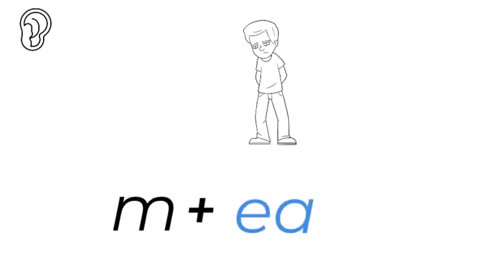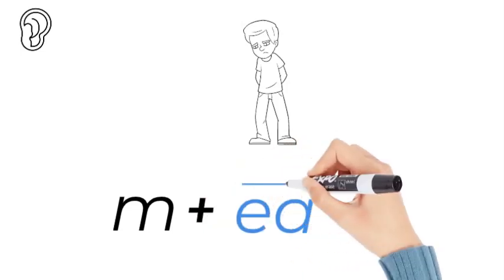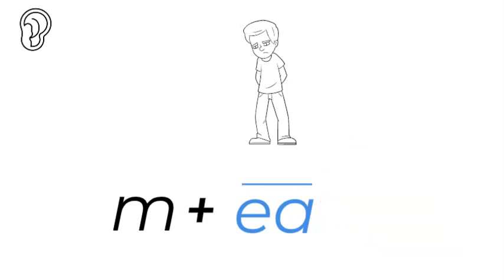That is a long vowel sound, so we put the long line over it. There's five long vowel sounds: A, E, I, O, U. And one of the ways to write an E is the E-A.